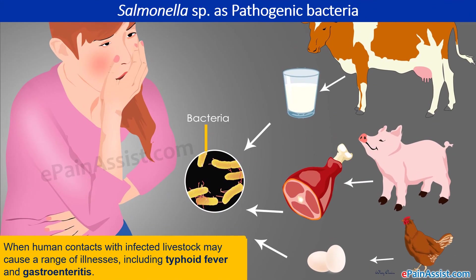Some bacteria are harmful to living things. For example, Salmonella species are pathogenic bacteria, meaning they are able to cause illness. When livestock such as cows, pigs, or poultry are infected by Salmonella species and their products are not managed properly, humans who come into contact with these products may develop illnesses such as typhoid fever and gastroenteritis.